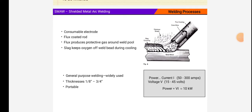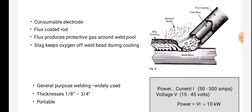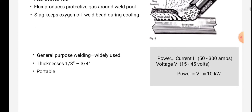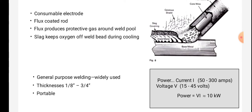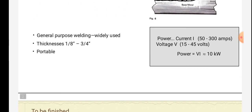SMAW Shielded Metal Arc Welding is shown in the figure. Consumable electrode flux coated rod, flux produces protective gas around weld pool, slag keeps oxygen off weld bead during cooling. It is shown in the figure. General purpose welding, widely used, thickness is one-eighth inch to three-quarter inch, portable.